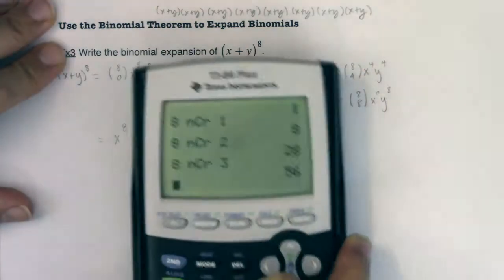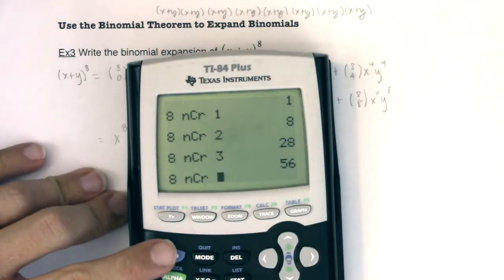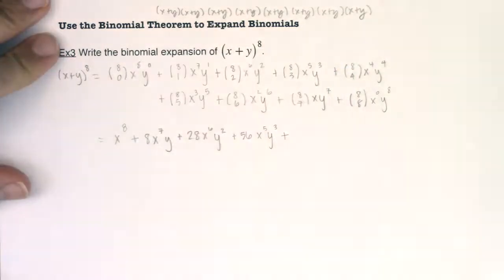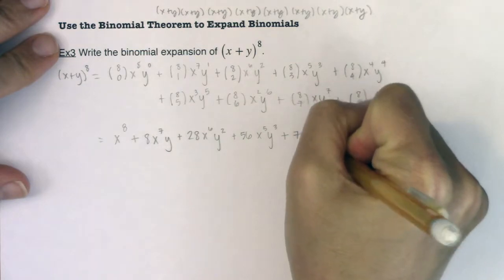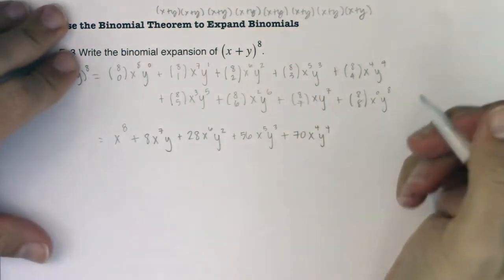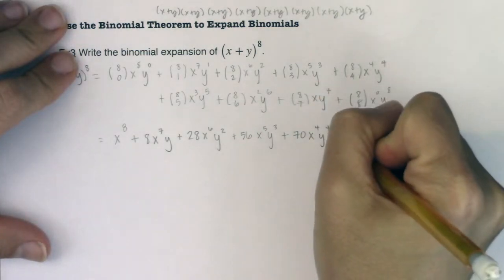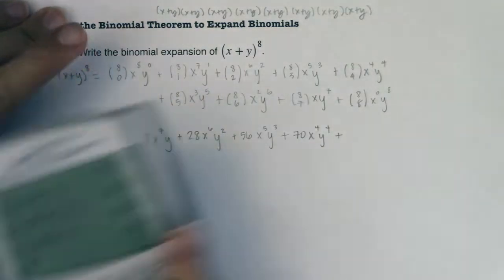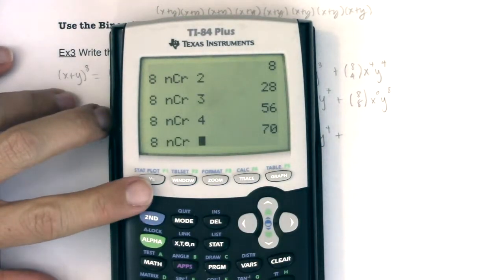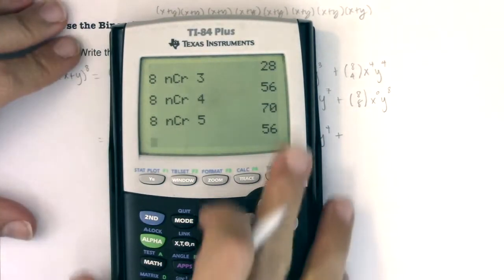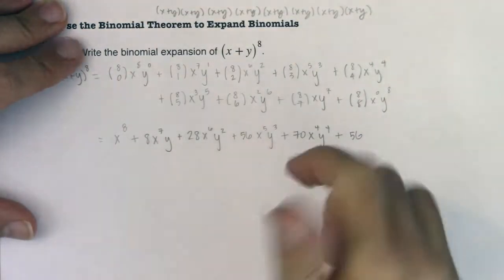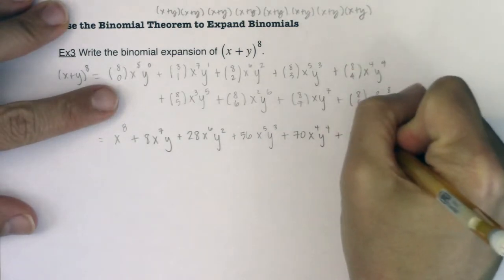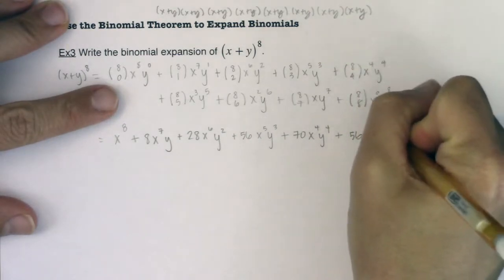We were up through the x to the fifth y cubed. Let's do eight choose four here. Looks like I'm at 70. Let's keep on going here. I've got eight choose five. 56. Interesting, got the same number, a repeated number. We've got x cubed y to the fifth.